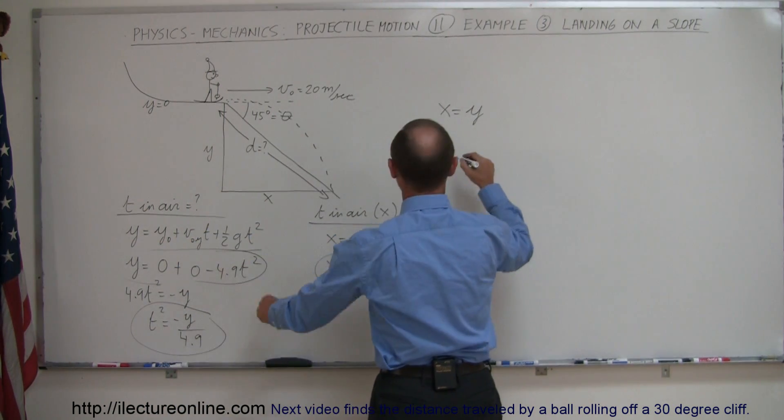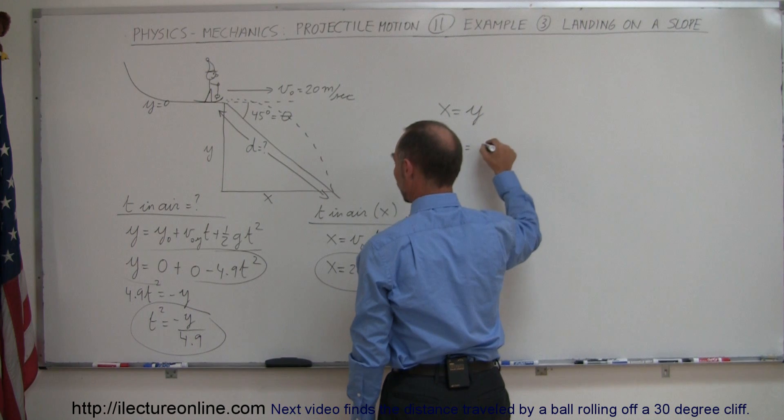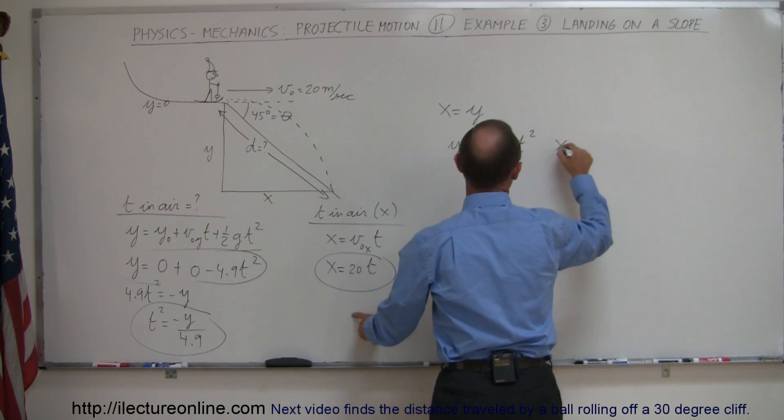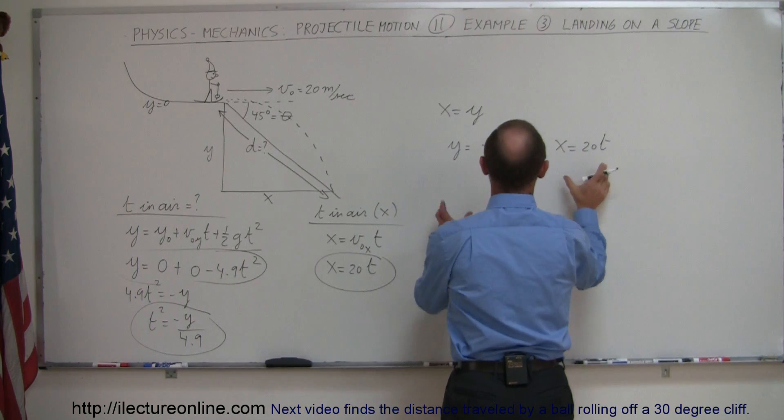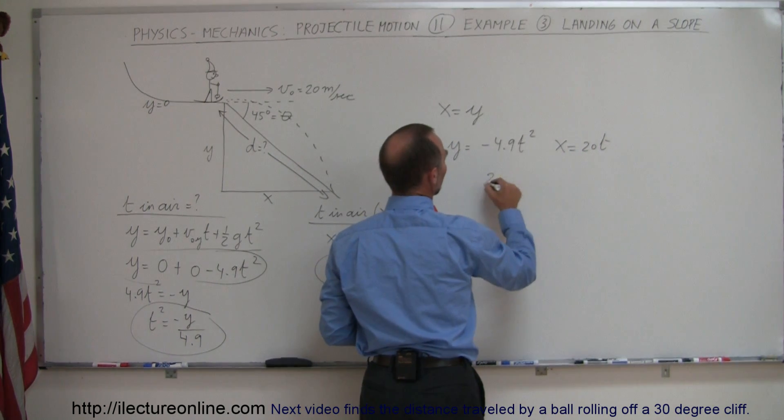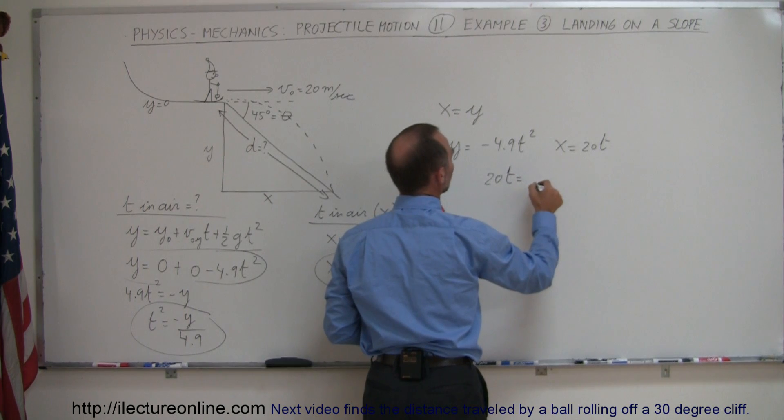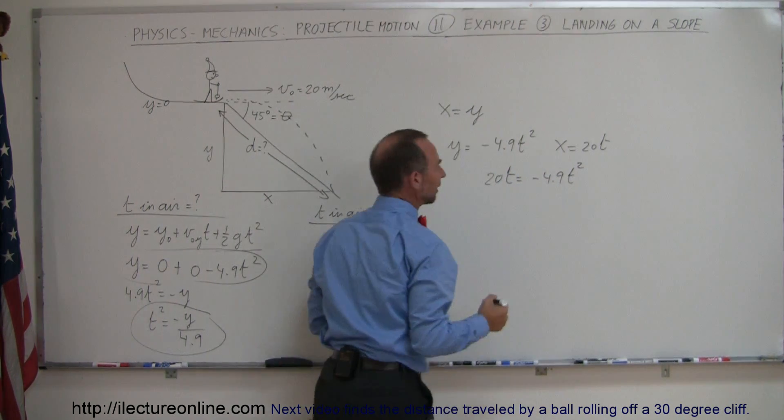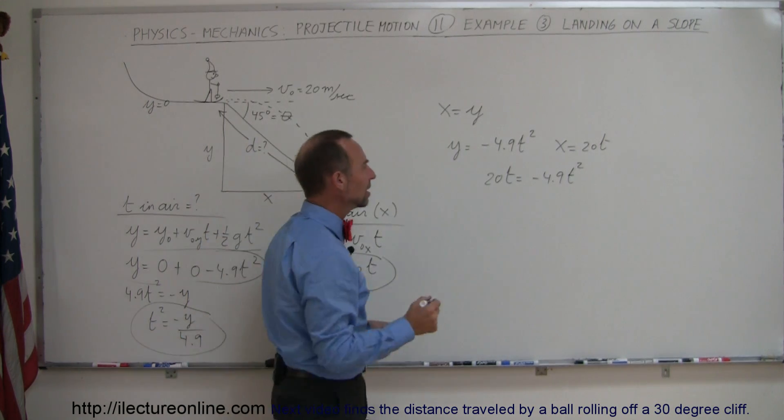So that means that since y is equal to minus 4.9 t squared, and x is equal to 20 t, I can set those two equal to each other, so I can write that 20 t is equal to minus 4.9 t squared. Notice I can divide both sides by t,